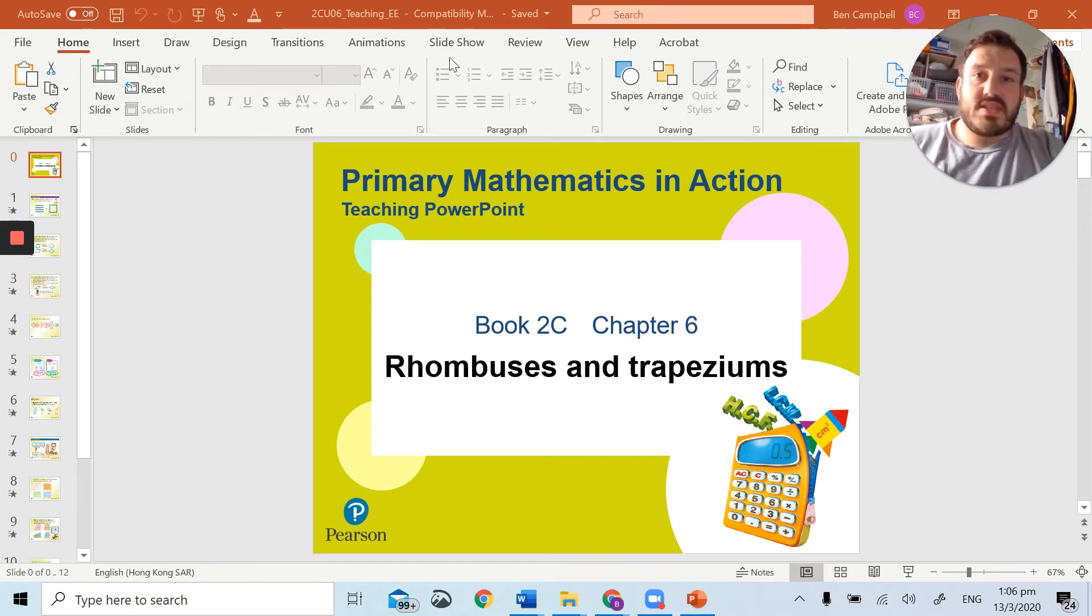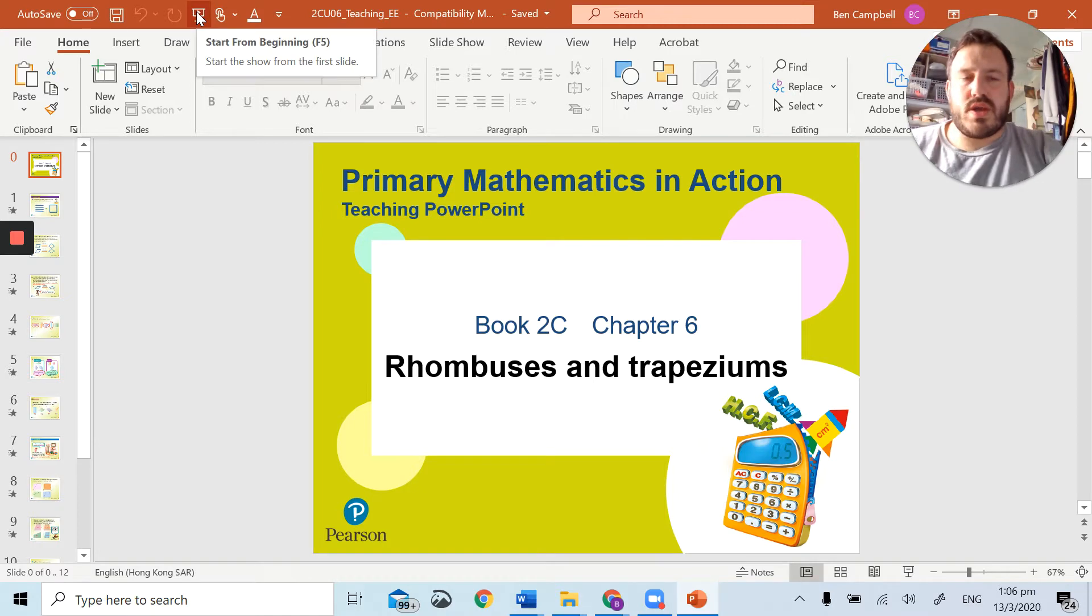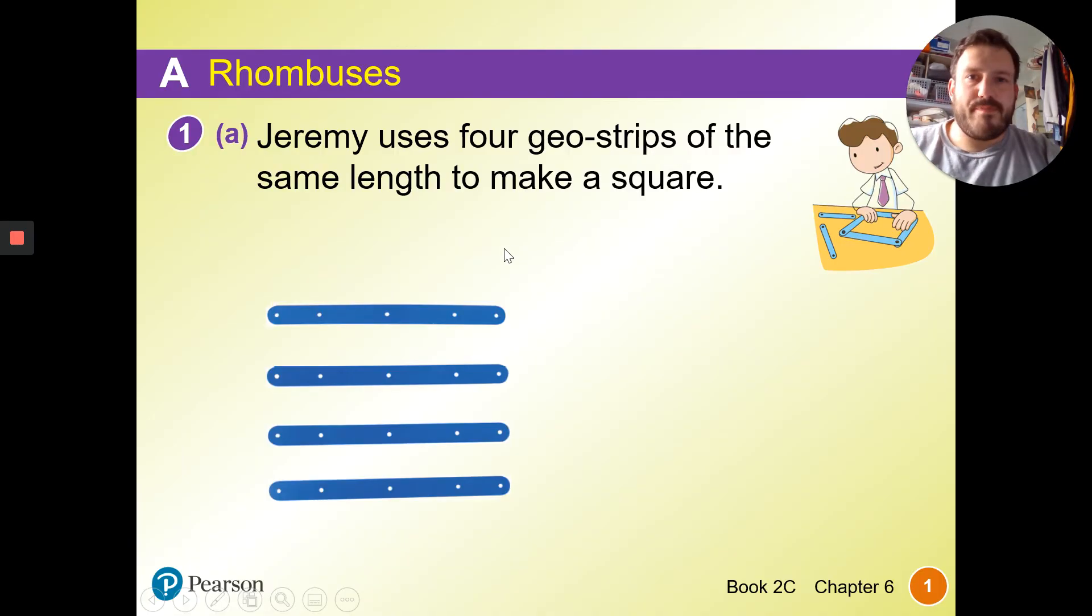Last week we looked at squares and rectangles. Hopefully you all found the worksheets nice and easy. This week we're going to look at rhombuses and trapeziums. So we're continuing with 2D shapes. Let's get straight into it.